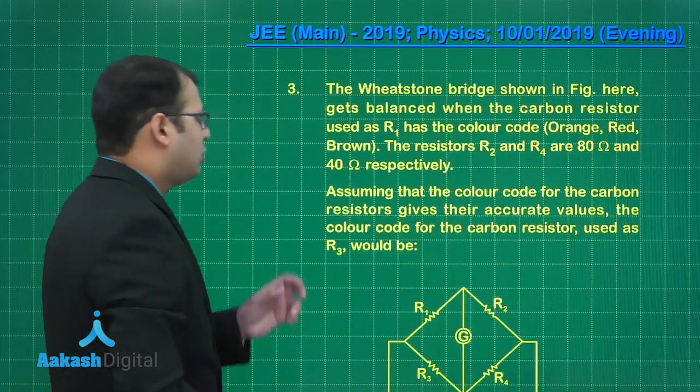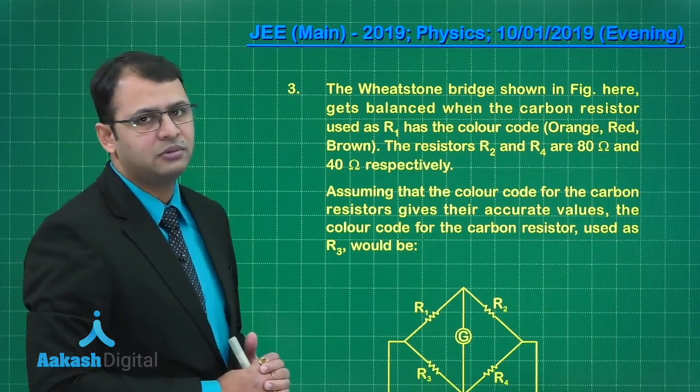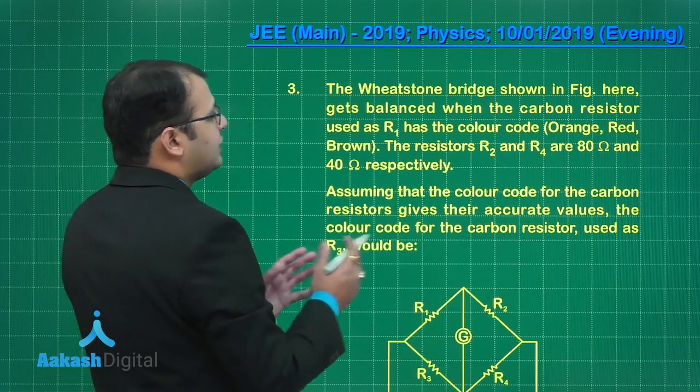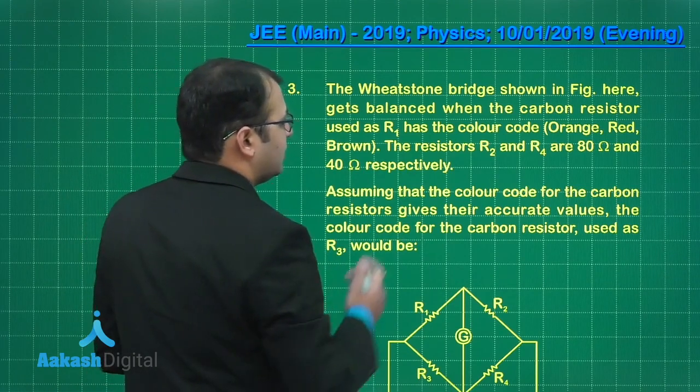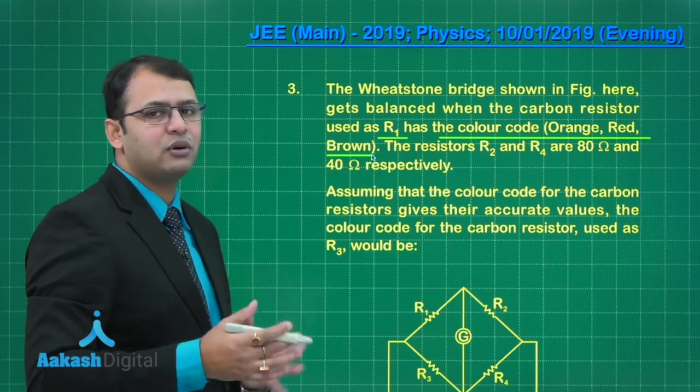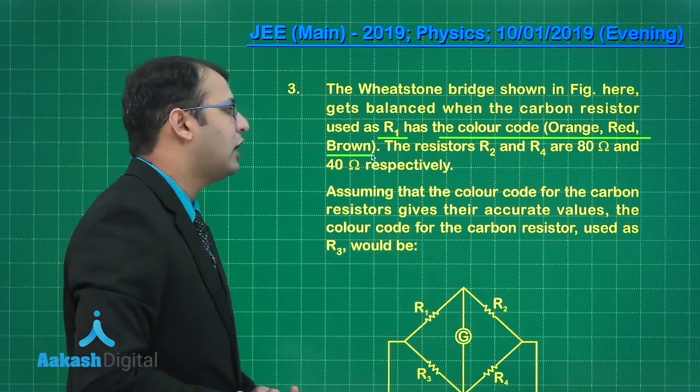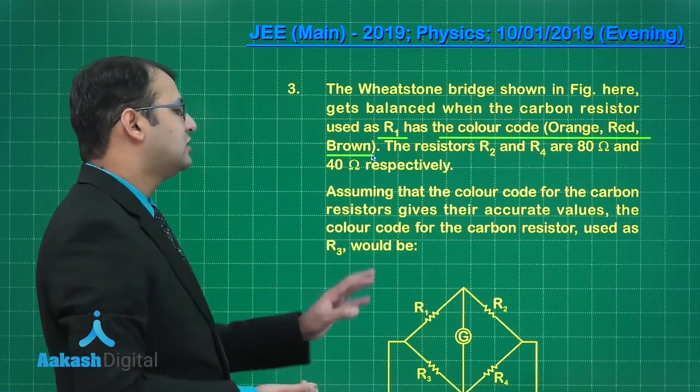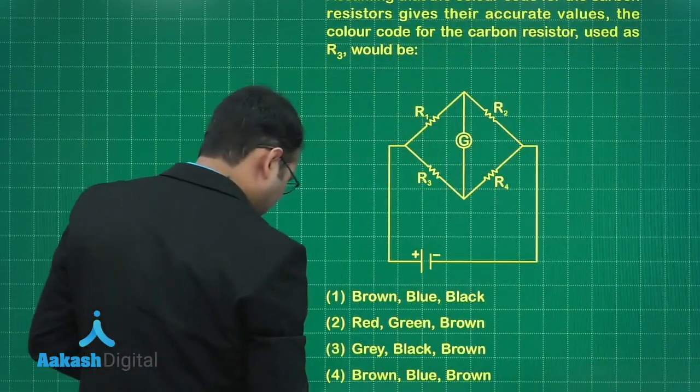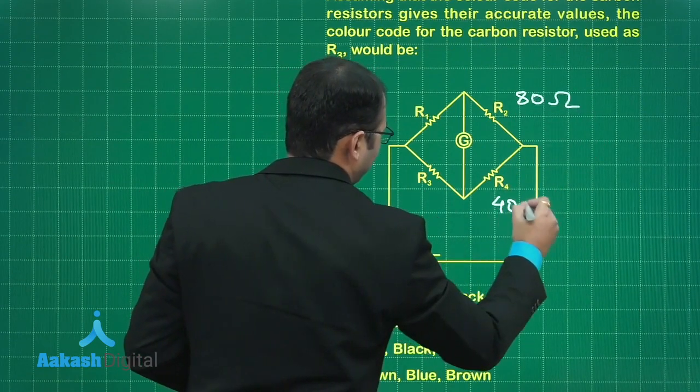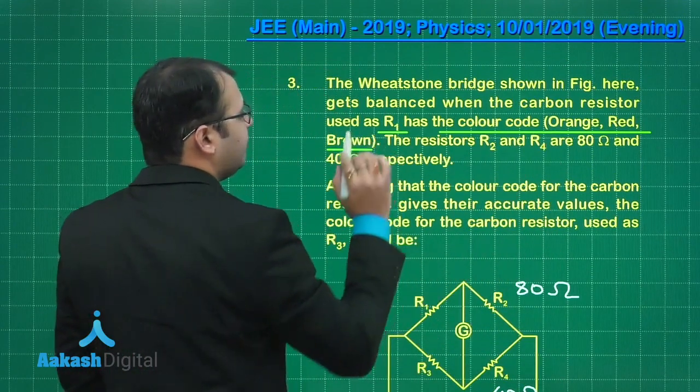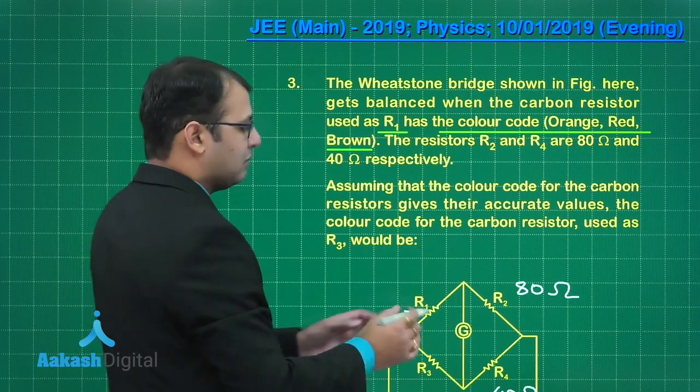Let's move ahead and see our next question. This belongs to the section of electromagnetism and chapter of current electricity. As per the question there's a Wheatstone bridge shown in the figure. This gets balanced when carbon resistor used as R1 has the color coding of orange, red, and brown. That means I will have to find the resistance of this carbon resistor with the help of the mnemonic formula. The resistors R2 and R4 values have been given to us as 80 and 40. Assuming the color code of the carbon resistors gives their accurate values, the color code for the carbon resistor used as R3 would be?